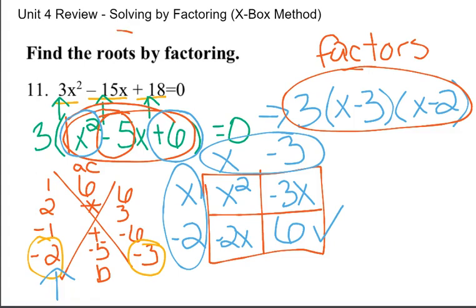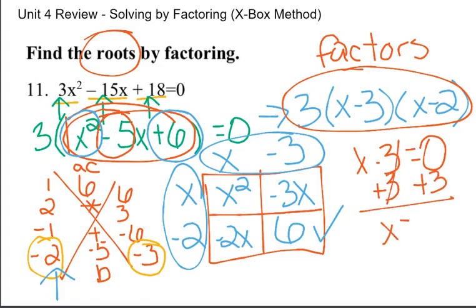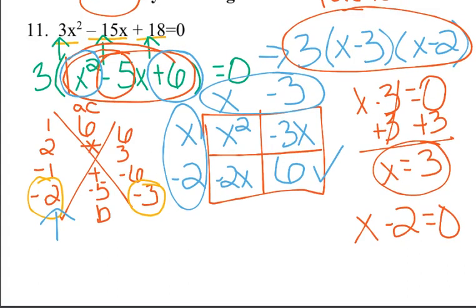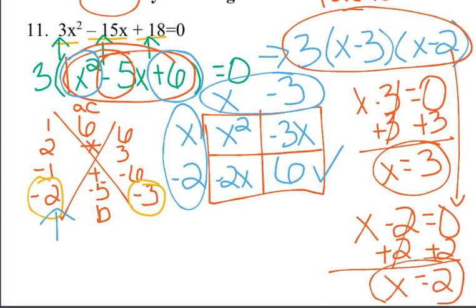But this problem asks us to find the roots. So we do have one step farther to go to find the roots. You can take both of your parentheses, set them equal to 0, and you will find your roots. In this case I could solve by adding 3 to both sides, and my first root is 3. My second root can be found by setting x minus 2 equal to 0. Add 2 to both sides, and my second root is 2. So that is how I would solve by factoring.